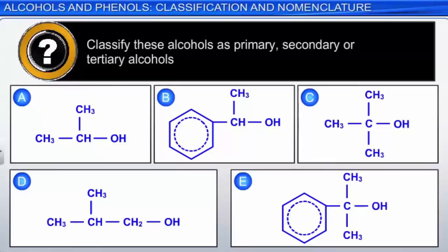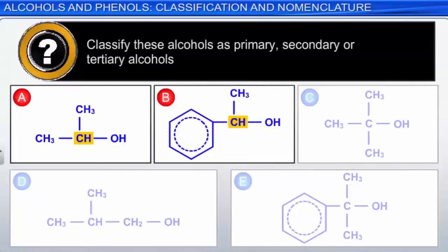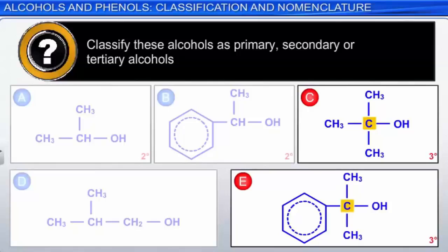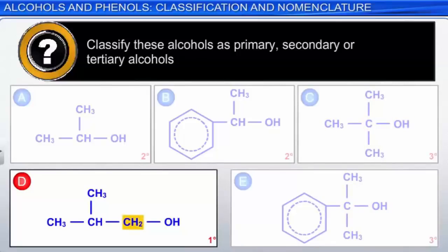Here is a problem for you to try. Classify these alcohols as primary, secondary, or tertiary. Molecules A and B are both secondary alcohols — in both A and B, the carbon bonded to the hydroxyl group is attached to two other carbons. Molecules C and E are tertiary alcohols; the hydroxyl-bonded carbon is bonded to three other carbons. Molecule D is a primary alcohol — only one carbon-containing group is attached to the hydroxyl-bonded carbon.